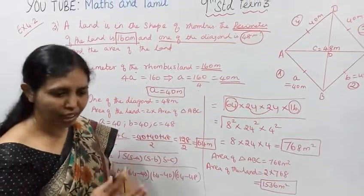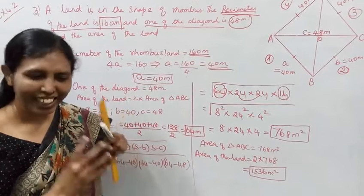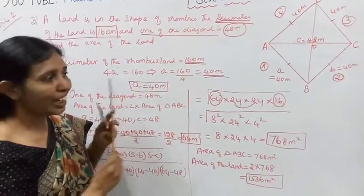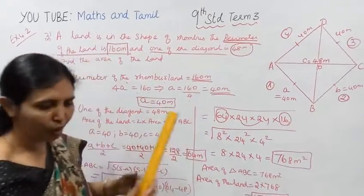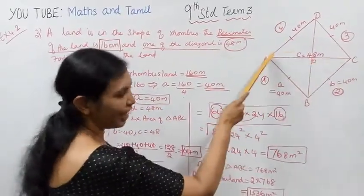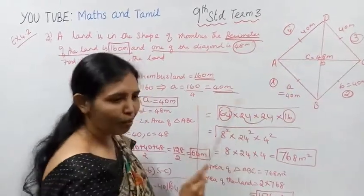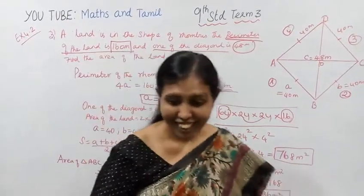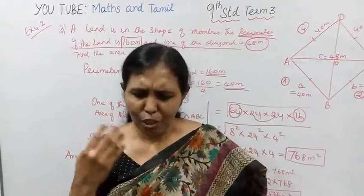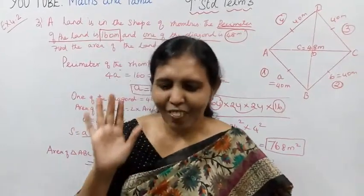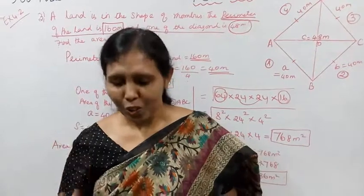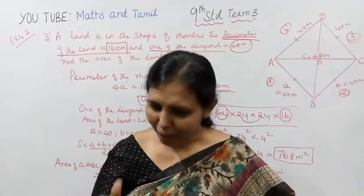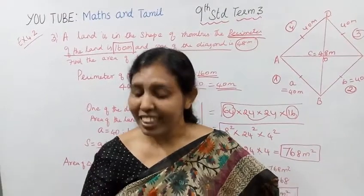We used one triangle's area and multiplied by two to get the area of the rhombus. This is easier for students. If you practice problems like this, this channel will help you get 100 marks in maths. Please subscribe.